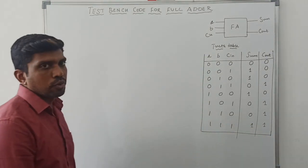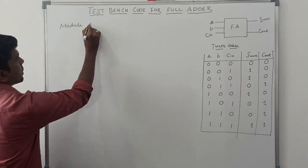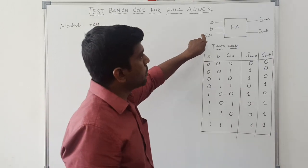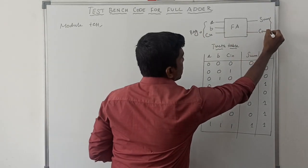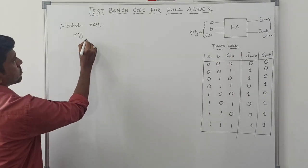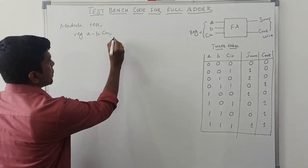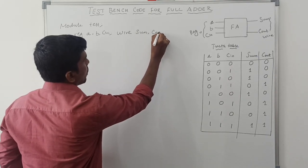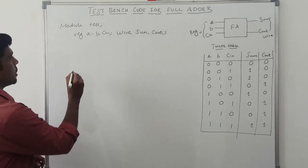Using this truth table, I am now going to write the testbench Verilog HDL code for full adder. As usual, first I write the module keyword, then the module name is 'test'. After declaring the module name, the next step is declaration of input and output variables. Input variables are set as register, output variables are set as wire. I declare input variables: reg a, b, c, and output wire sum, c_out.